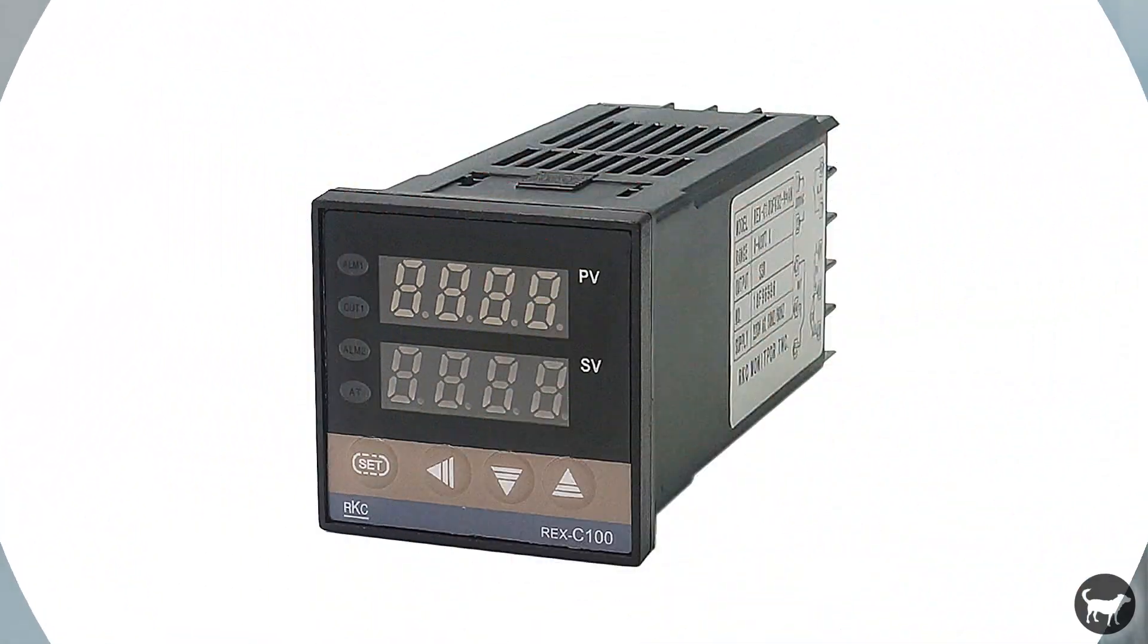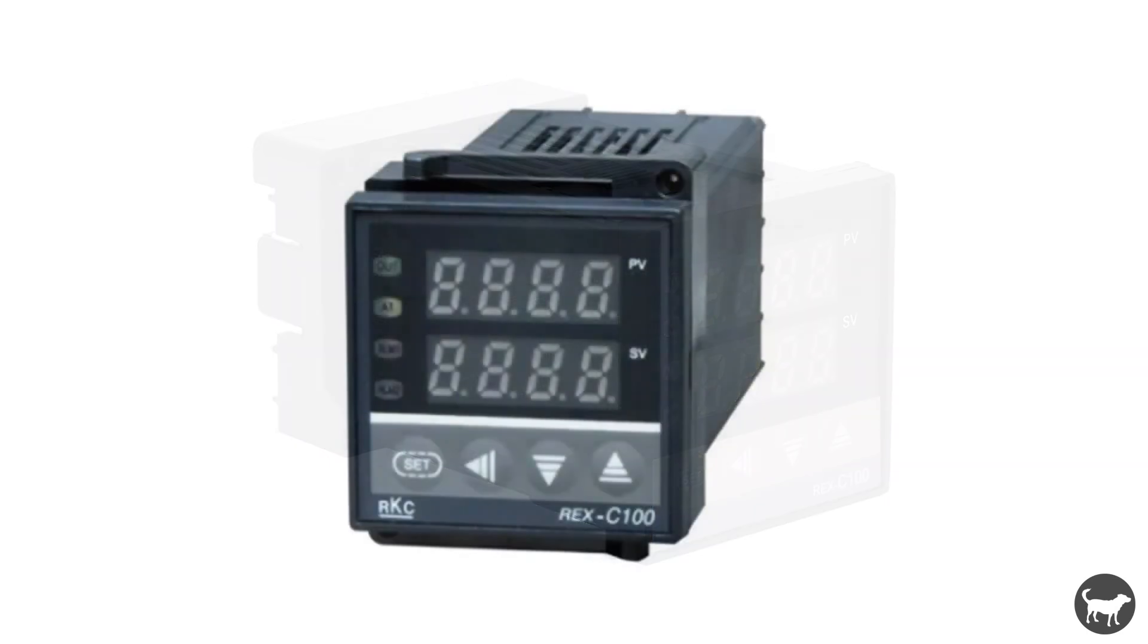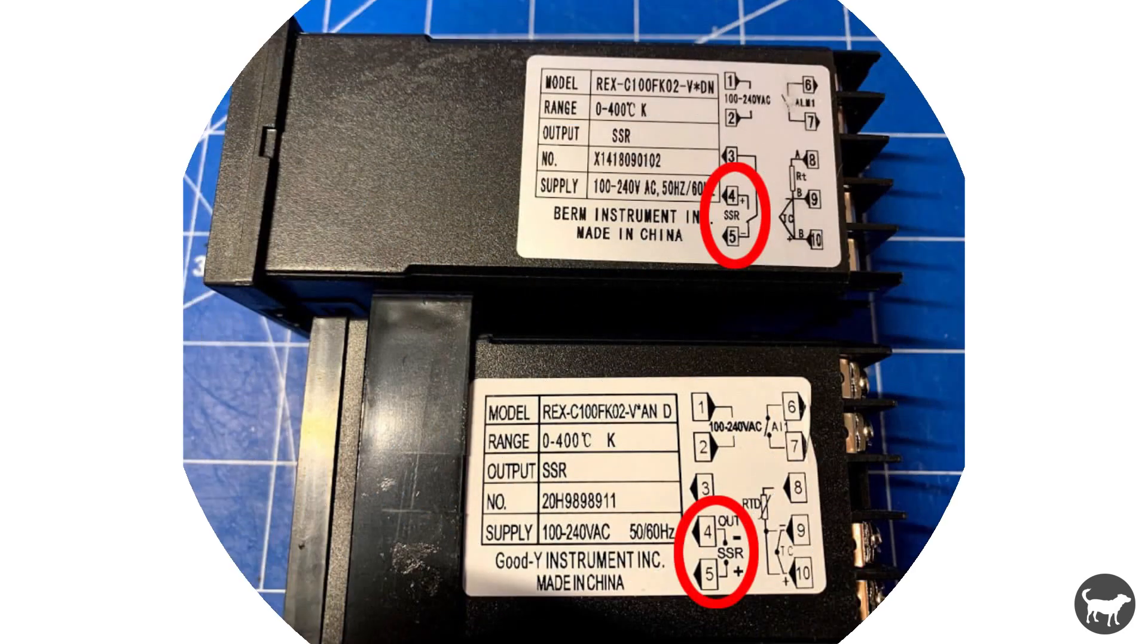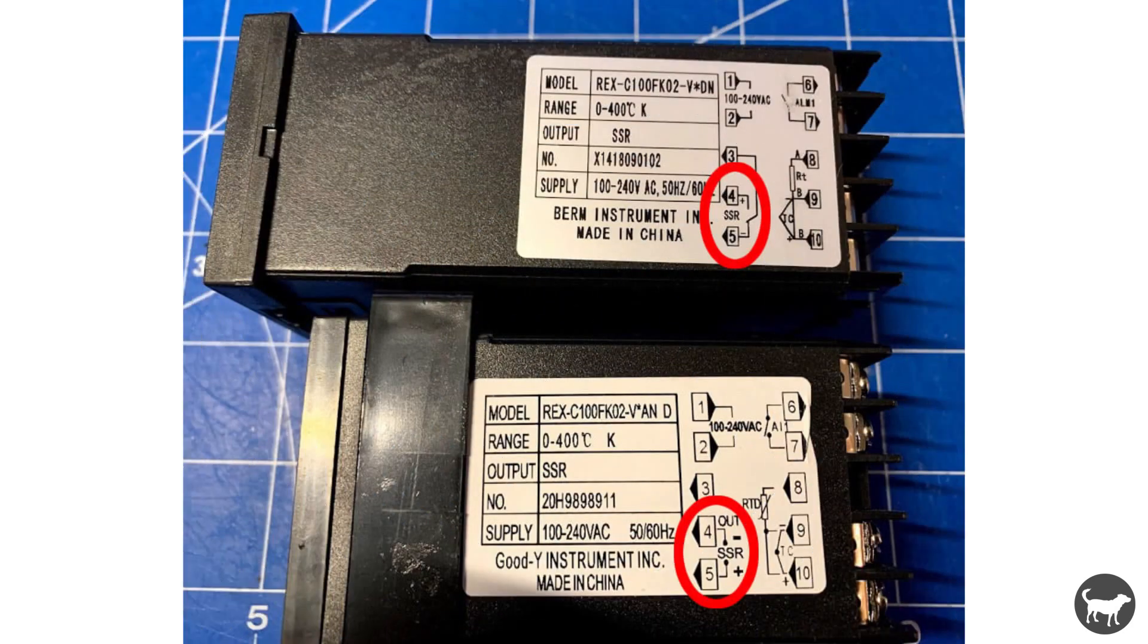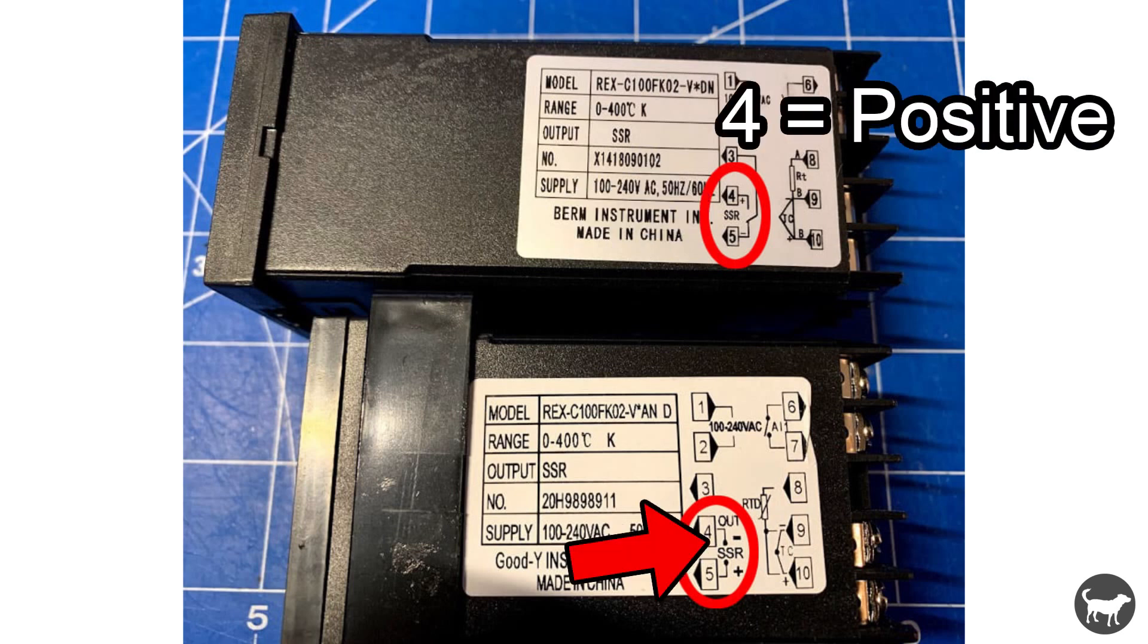So the last thing I wanted to go over was depending on the PID controller that you purchase, there might be a slight discrepancy in the terminals of the PID controller between the different brands. So the one on the top here, as you can see, four and five are different polarities than the PID controller on the bottom here. So on the top, four is positive, and on the bottom, four is negative.